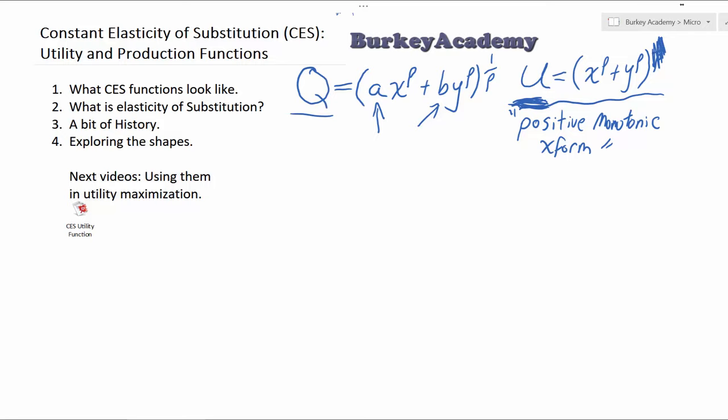Give someone a budget, give them prices — it doesn't matter. The 1 over rho just makes the math a little bit harder. When it comes to a production function, you can't go mucking around with it like that, because the Q is really an important part here.